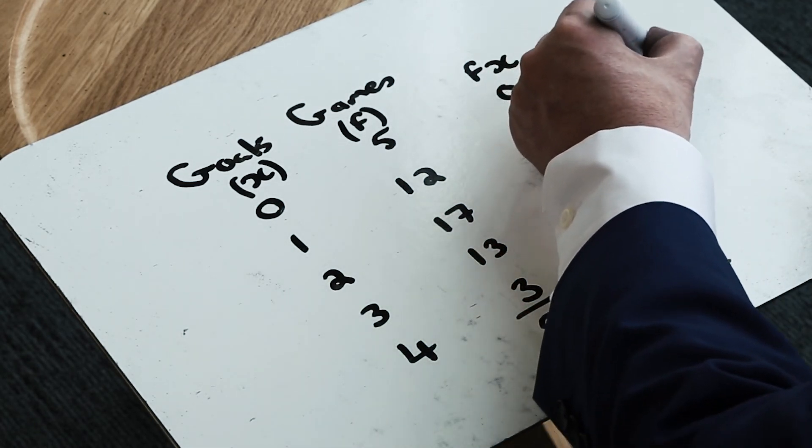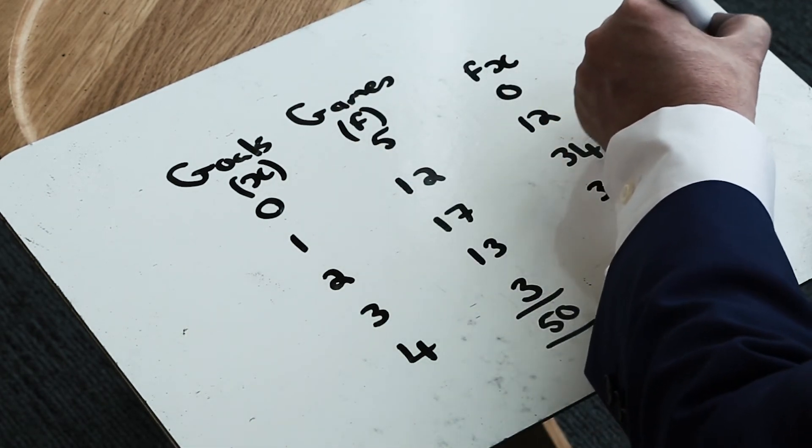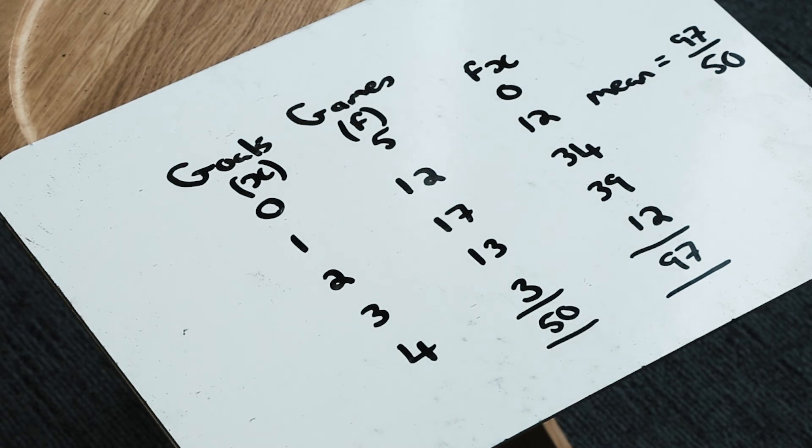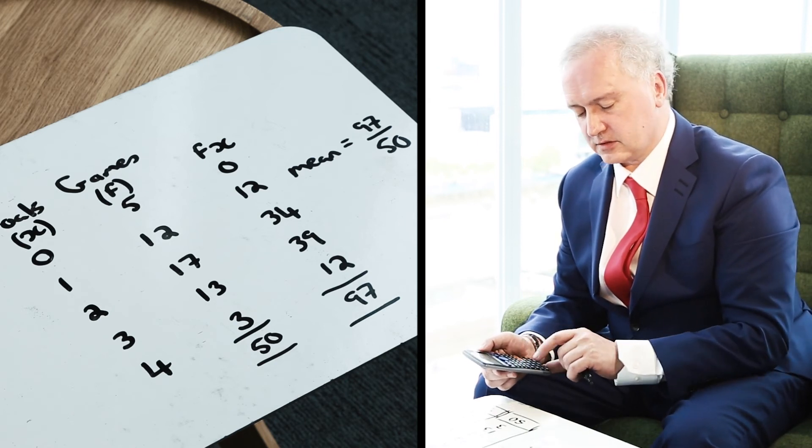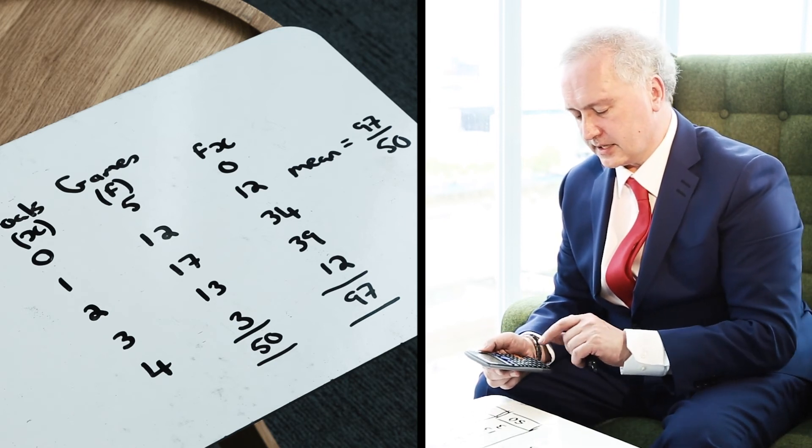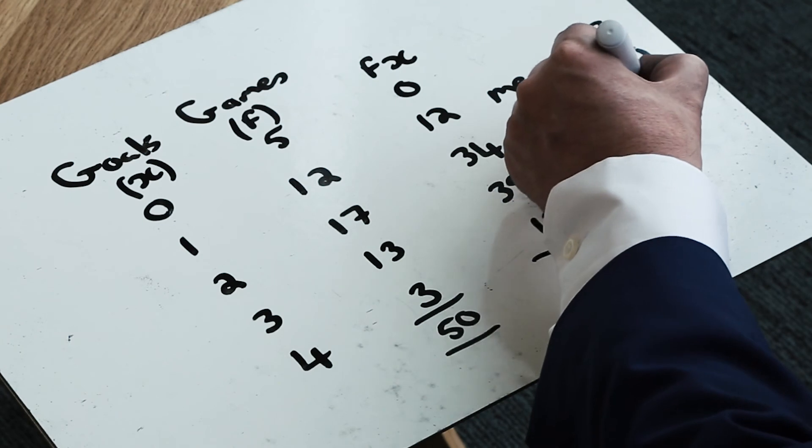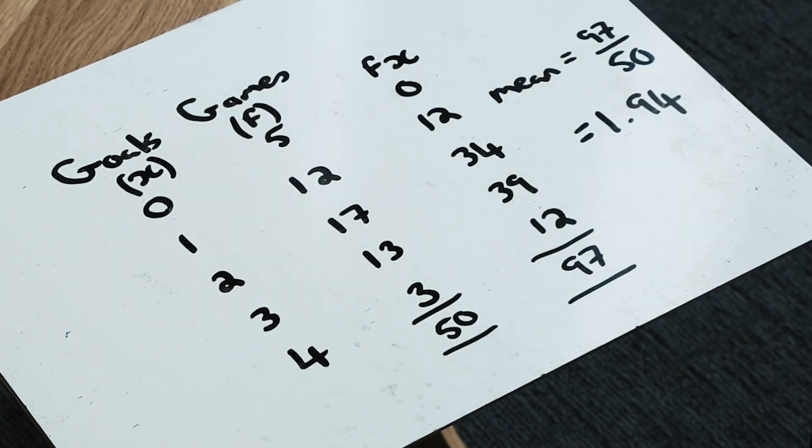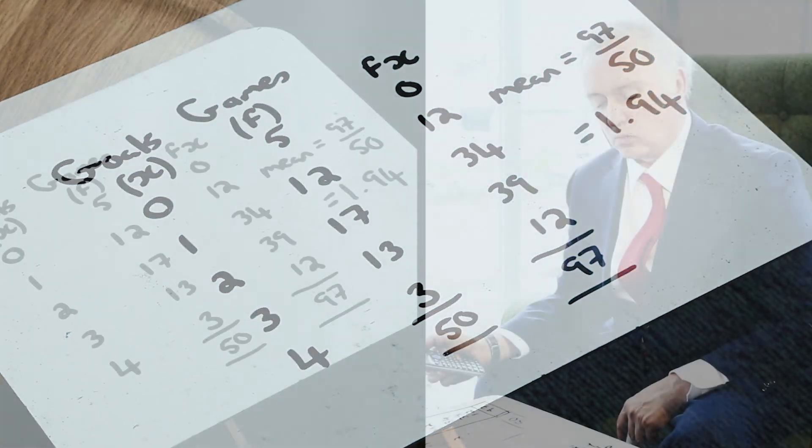So my mean from frequency data is just the total of my fx column, so my 97, and I'm dividing that by 50 to work out the average number of goals per game. If I type in 97 divided by 50, I can see the fractional answer is 97 over 50, which gives me 1.94 goals per game. I'm not going to round that off. I've been asked to work out the mean number of goals per game, and my final answer is 97 divided by 50, which is 1.94.